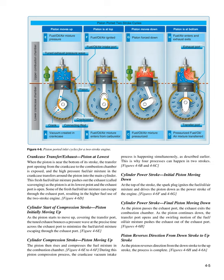Crankcase transfer/exhaust: when the piston is near the bottom of its stroke, the transfer port opening from the crankcase to the combustion chamber is exposed, and the high-pressure fuel/air mixture in the crankcase transfers around the piston into the main cylinder. This fresh fuel/oil/air mixture pushes out the exhaust — called scavenging — as the piston is at its lowest point and the exhaust port is open. Some of the fresh mixture can escape through the exhaust port, resulting in higher fuel use of the two-stroke engine. The tuned exhaust bounces a pressure wave at the precise time across the exhaust port to minimize the fuel/air/oil mixture escaping.